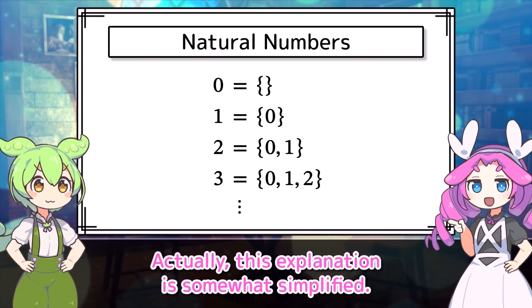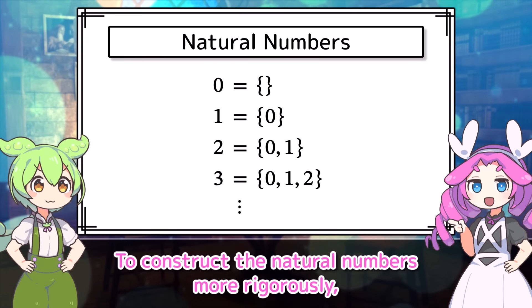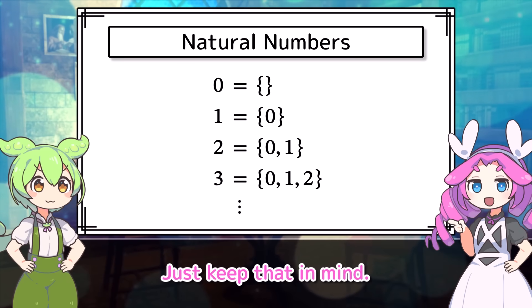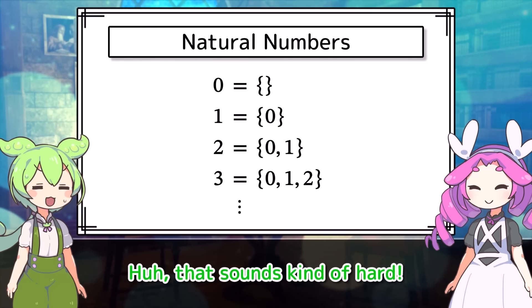Actually, this explanation is somewhat simplified. To construct the natural numbers more rigorously, you need to start from the foundational assumptions called axioms in mathematics. Just keep that in mind. That sounds kind of hard.